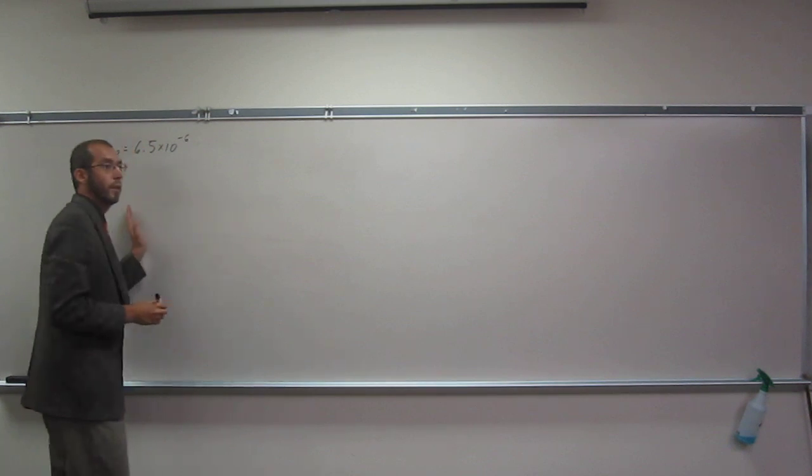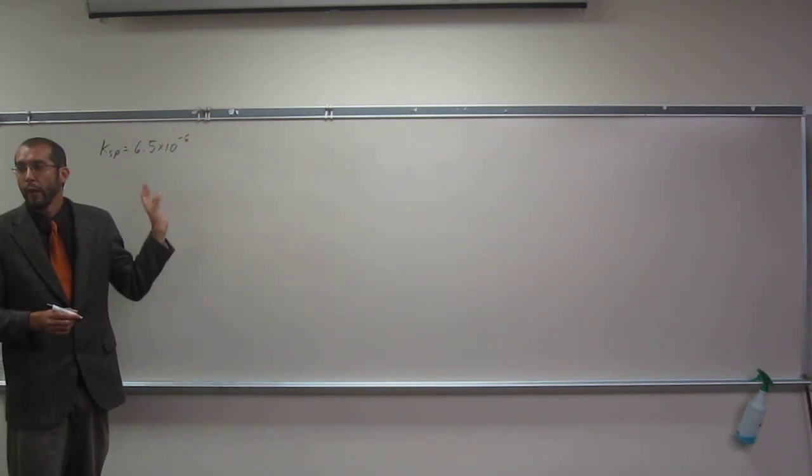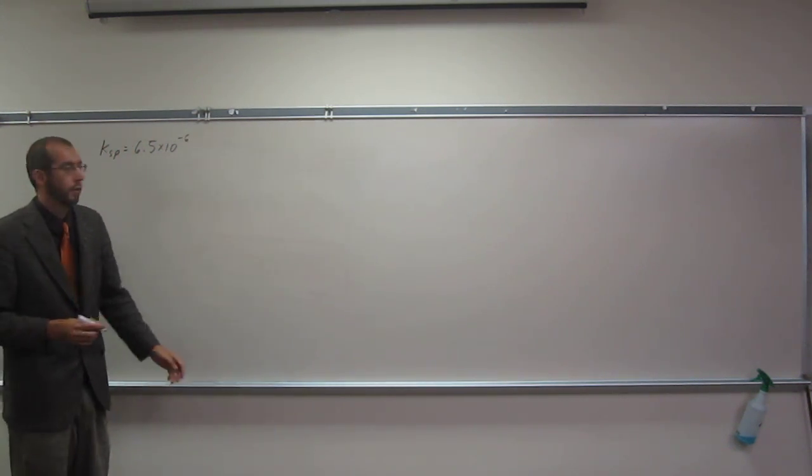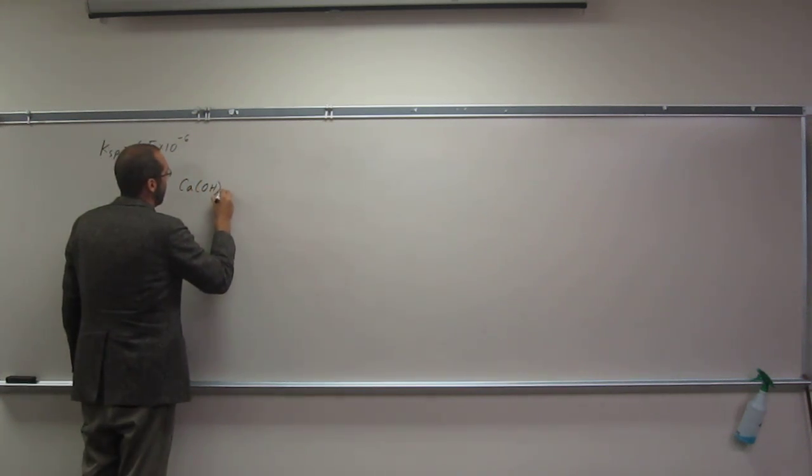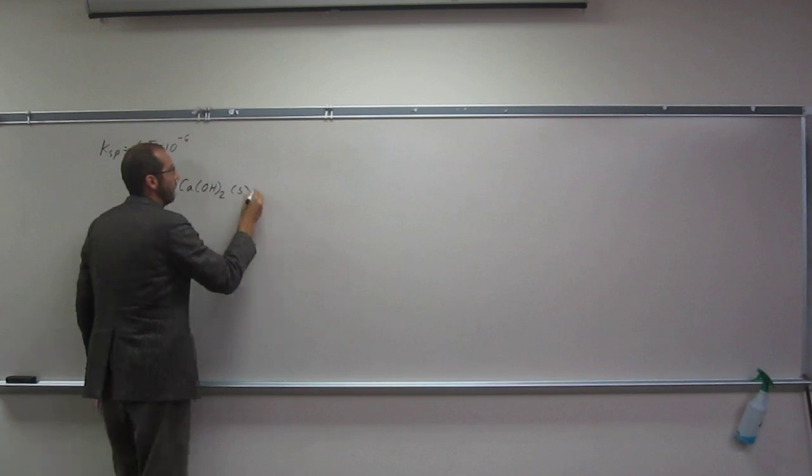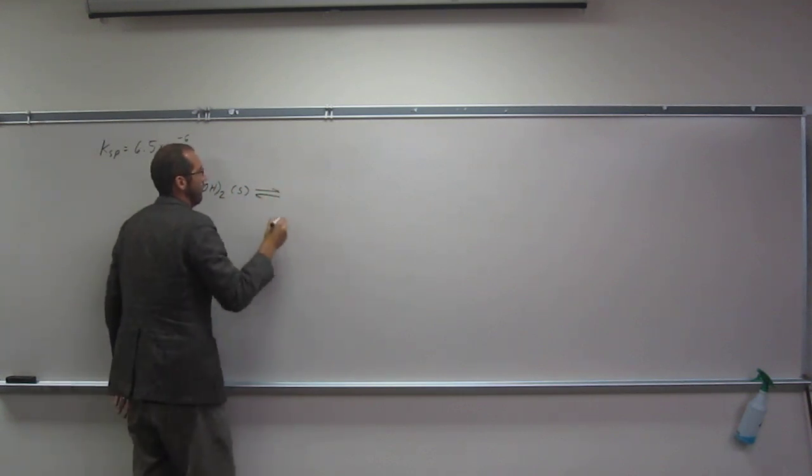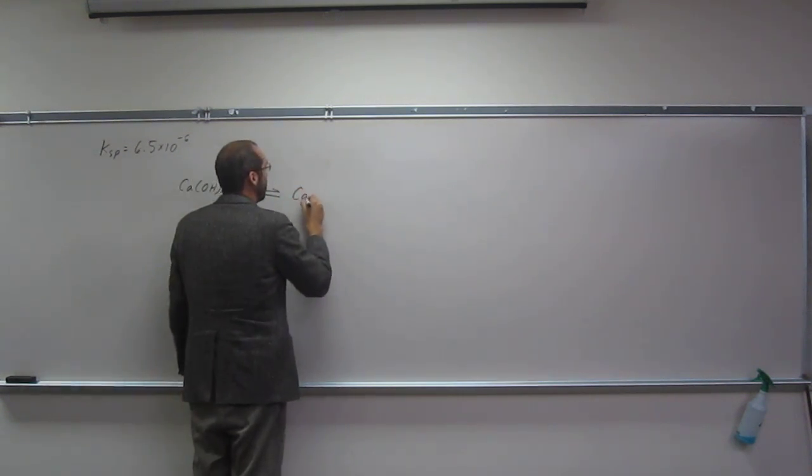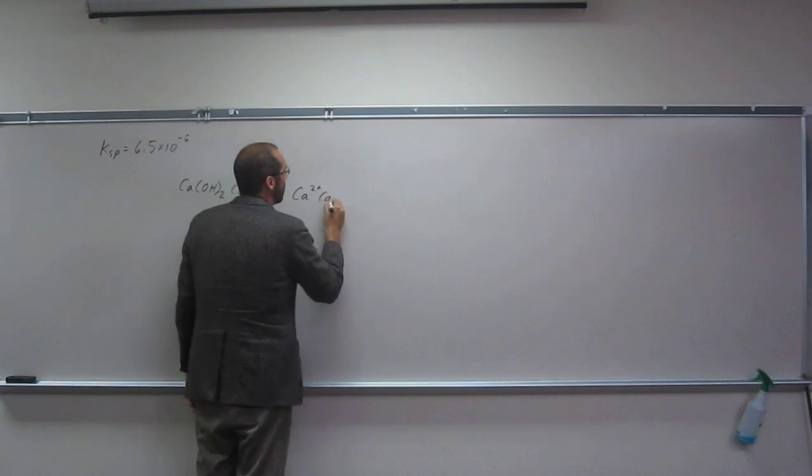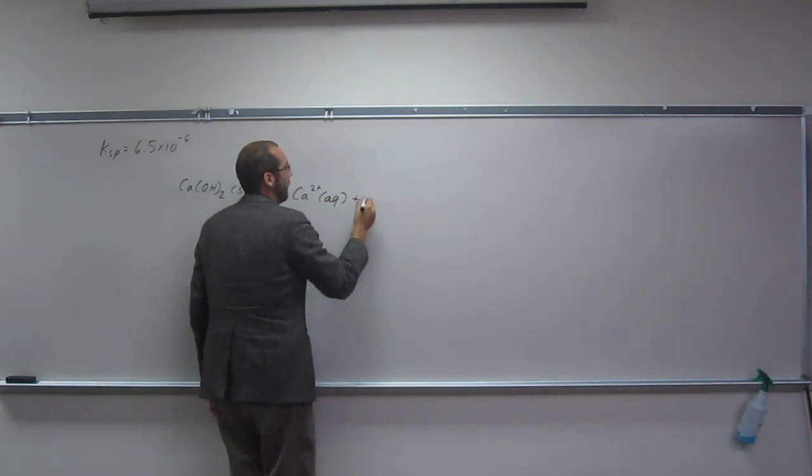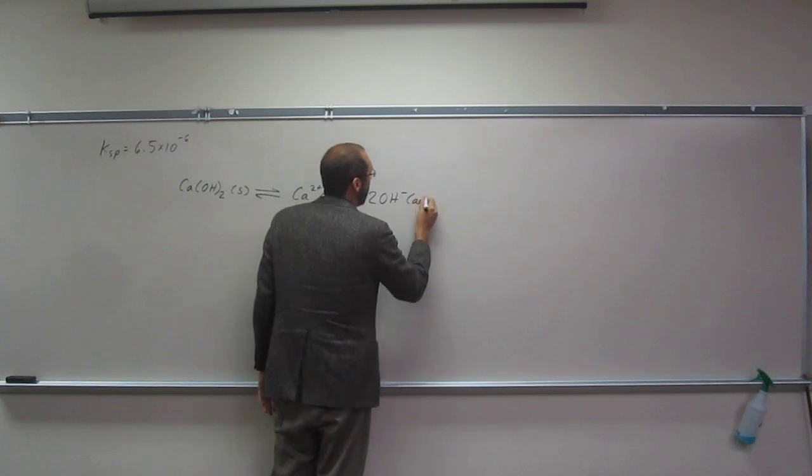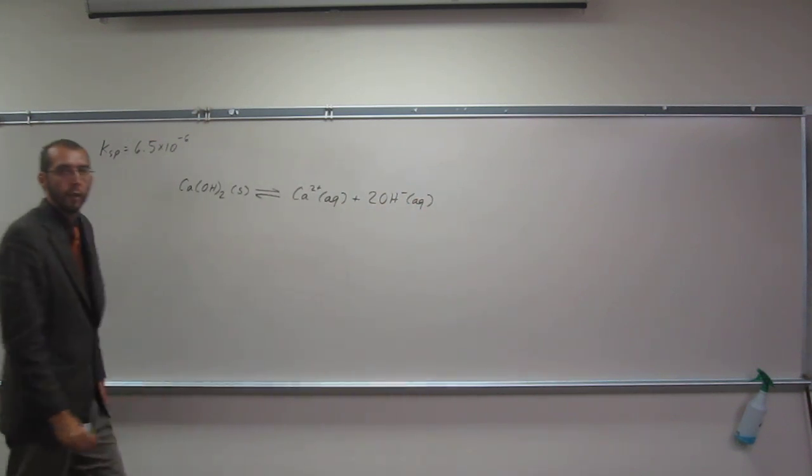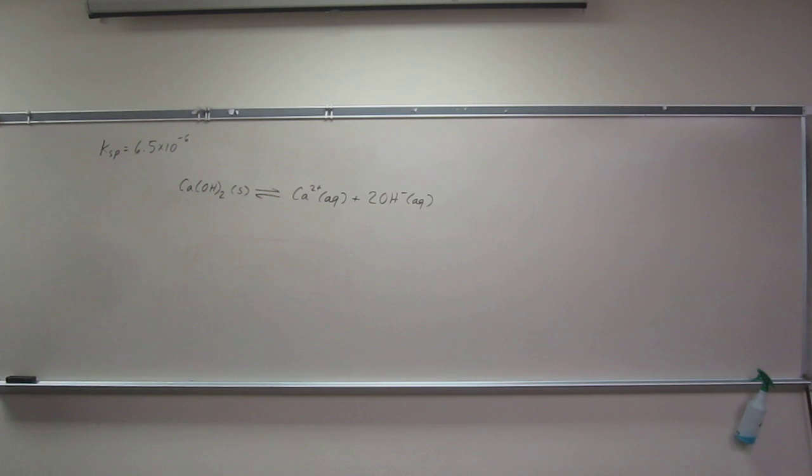So how do we do these things? We're going to have to write out the chemical equation first. If you don't know your polyatomic ions, it's going to be very difficult to do this particular type of problem. If you don't know your insolubles, you don't know your slightly solubiles.